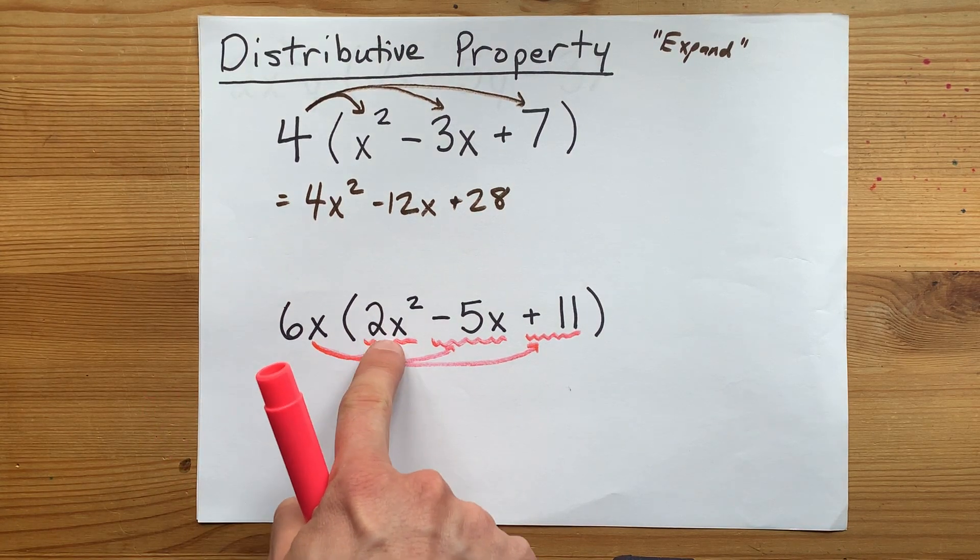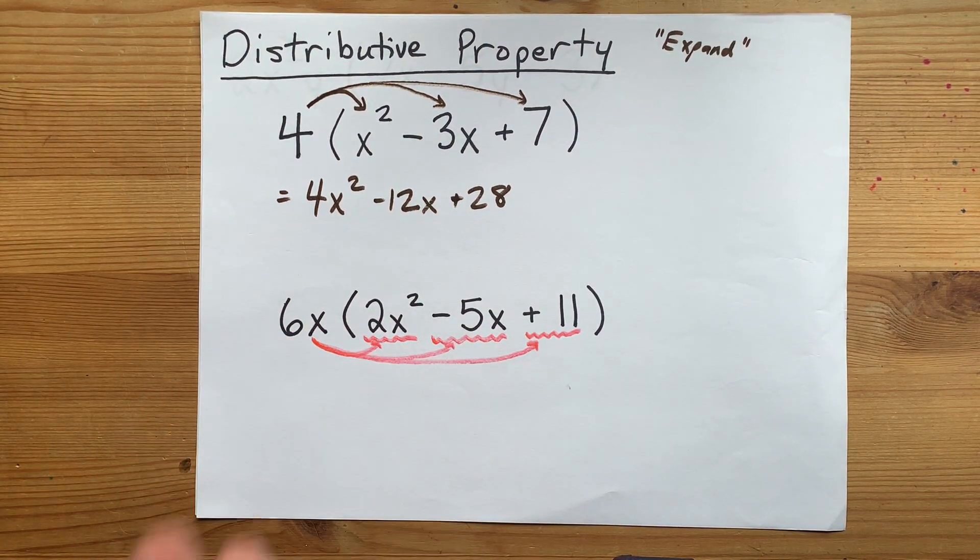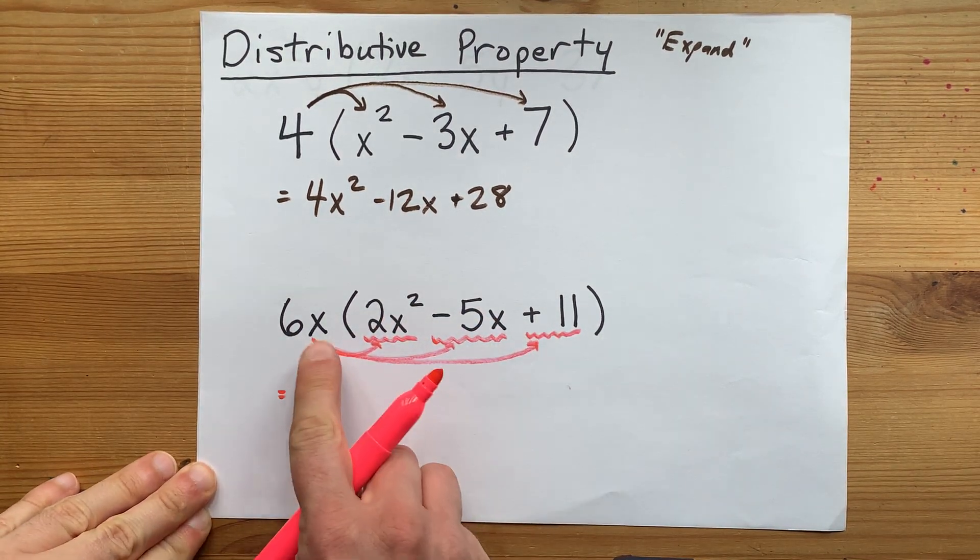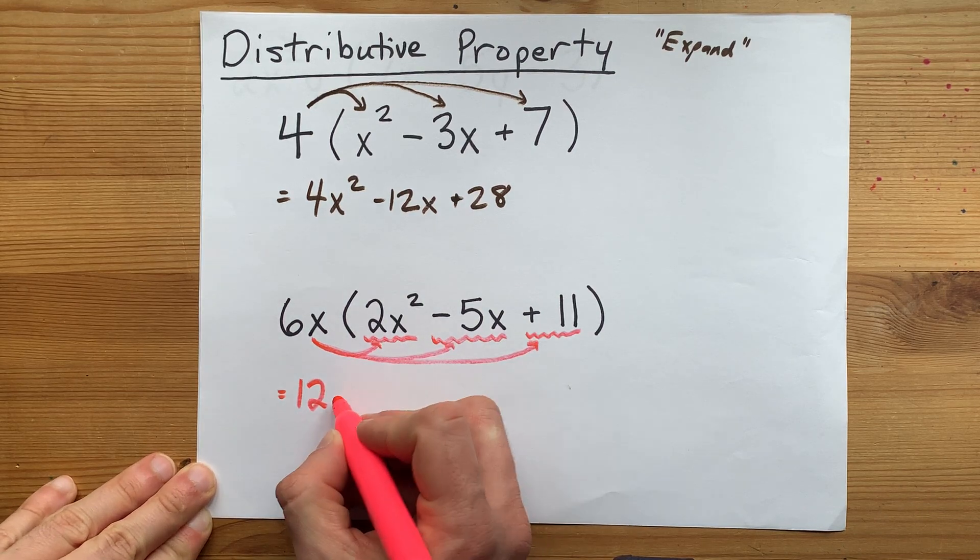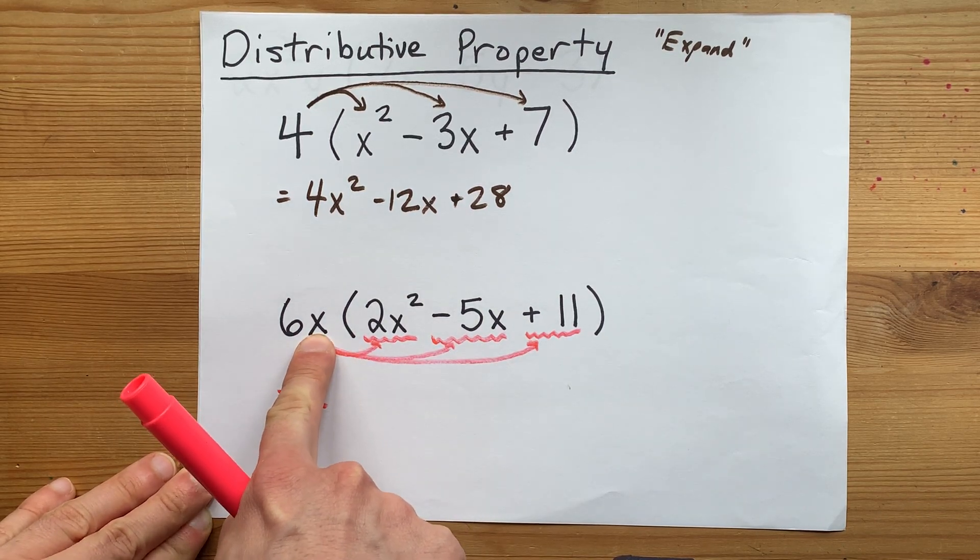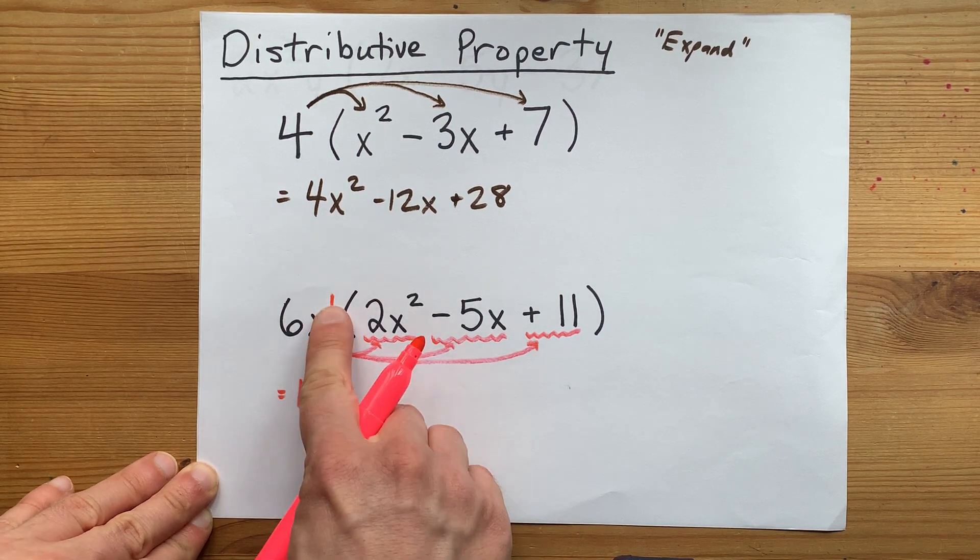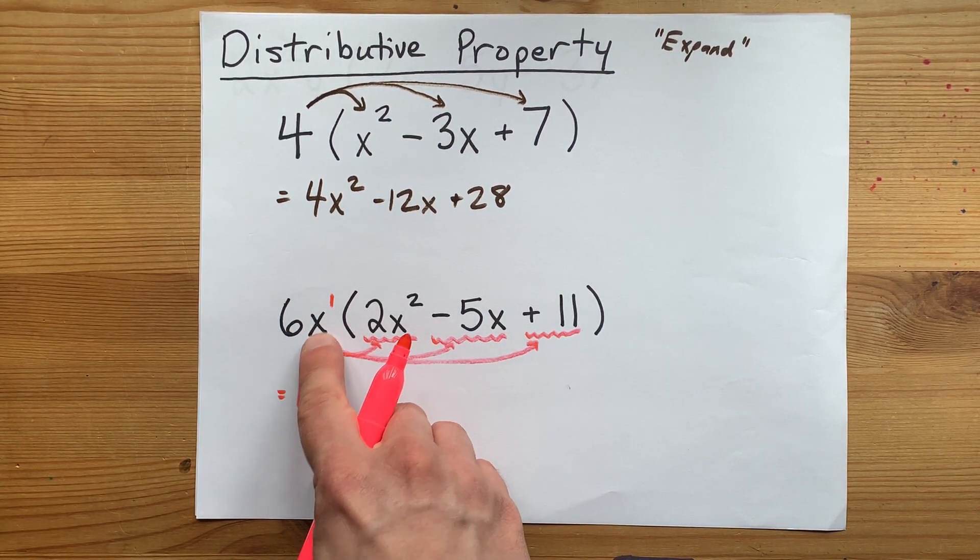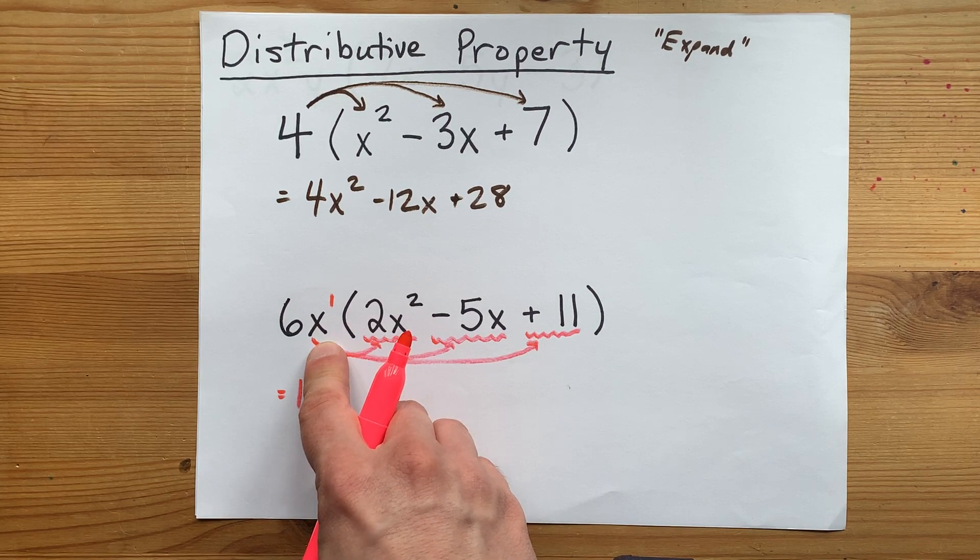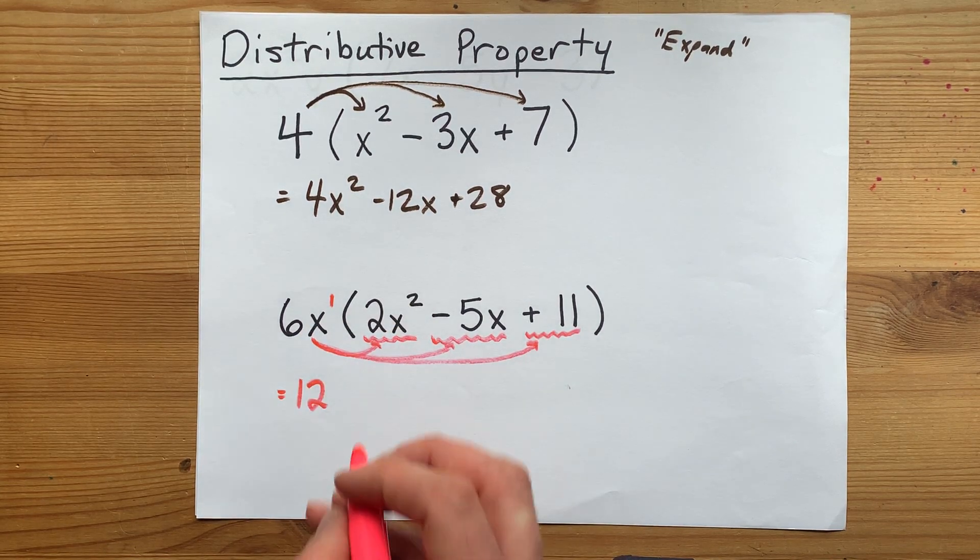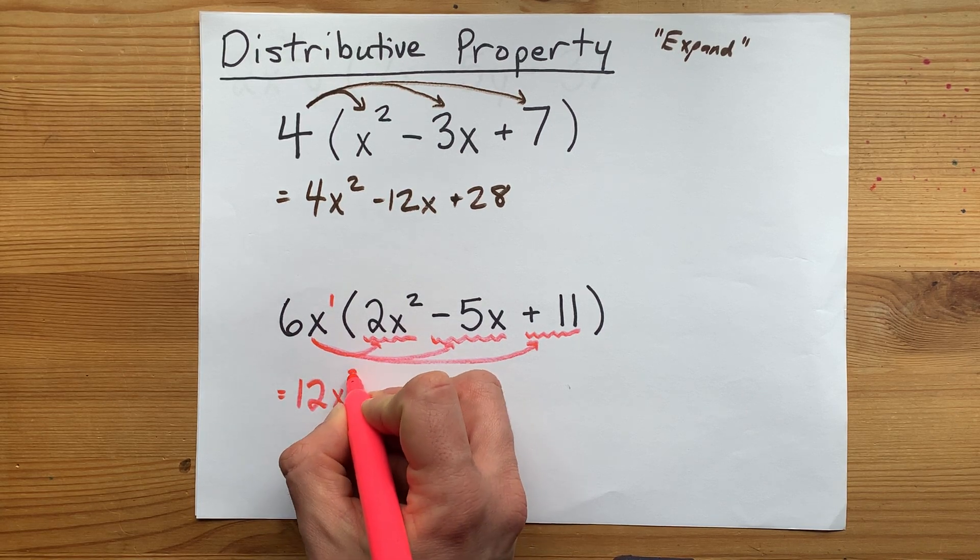6x times 2x squared. The numbers multiply together. 6 times 2 is 12. x times x squared. There is one x here, and I know there's no exponent on it, but if there wasn't an x here, we wouldn't have even written it. So there's definitely at least one there. Well, there's exactly one. And we're combining it with two more. That notches the exponent up to 3. That is 12x to the 3.